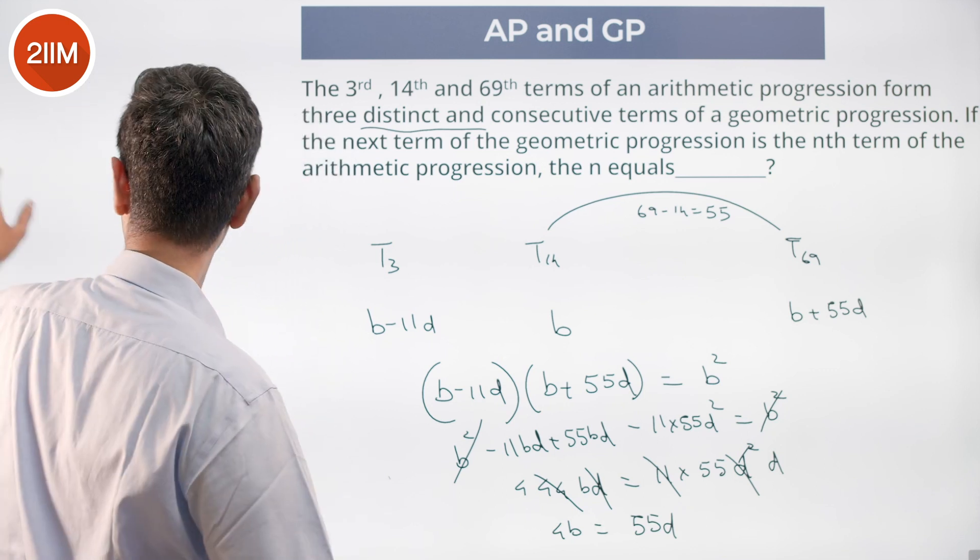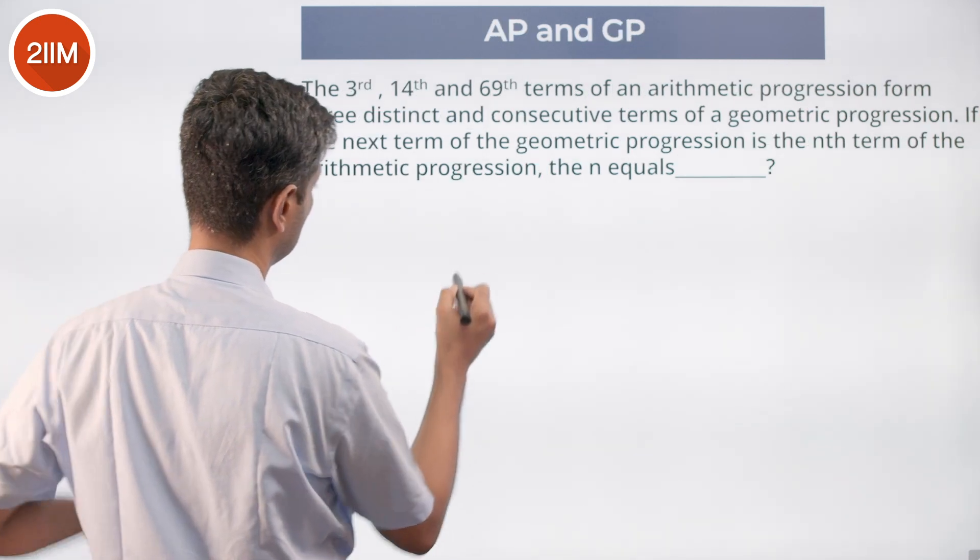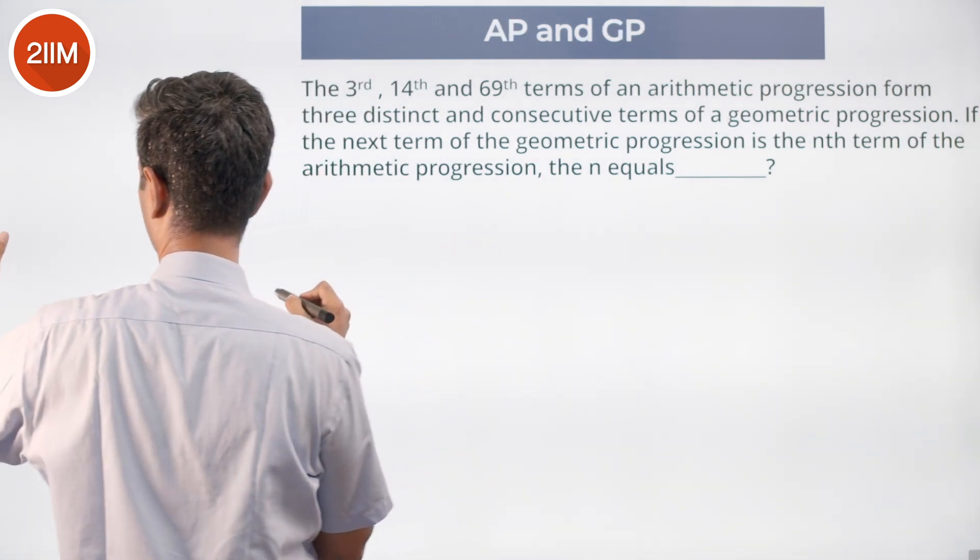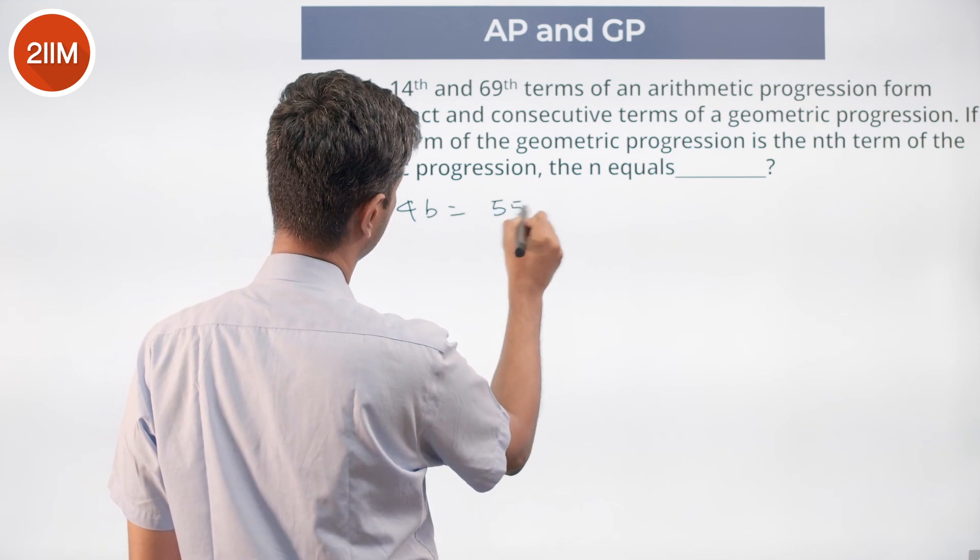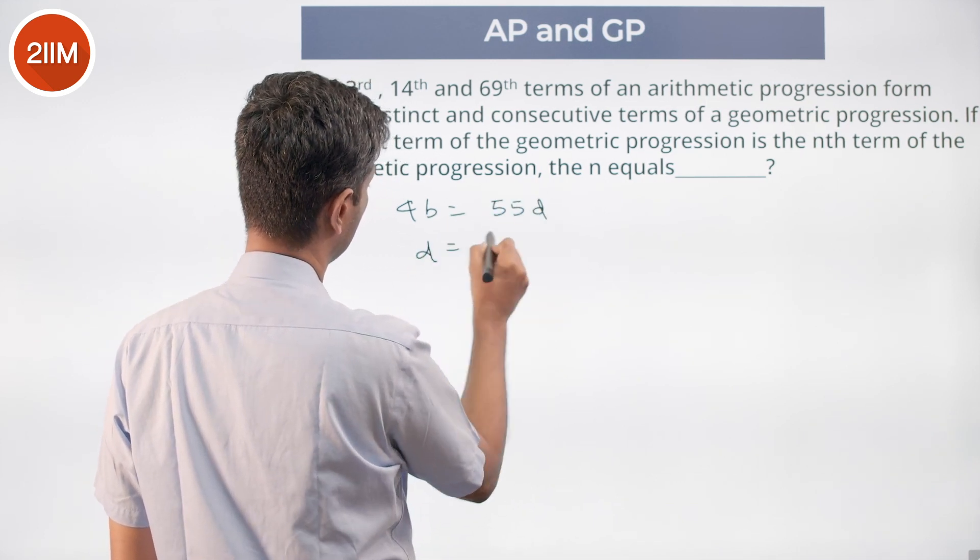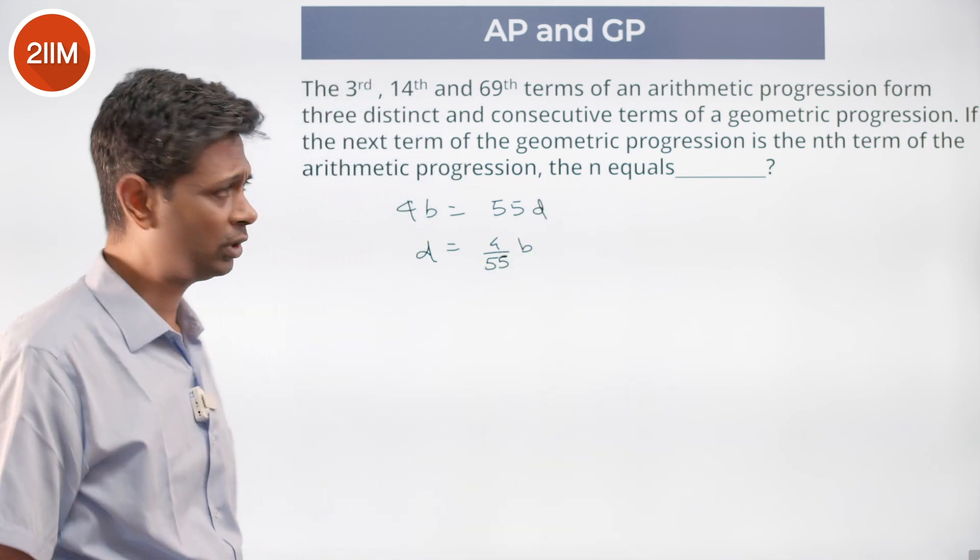Nice. Or b, 4b equals 55d. d is 4 by 55 times b. Nice, wonderful.